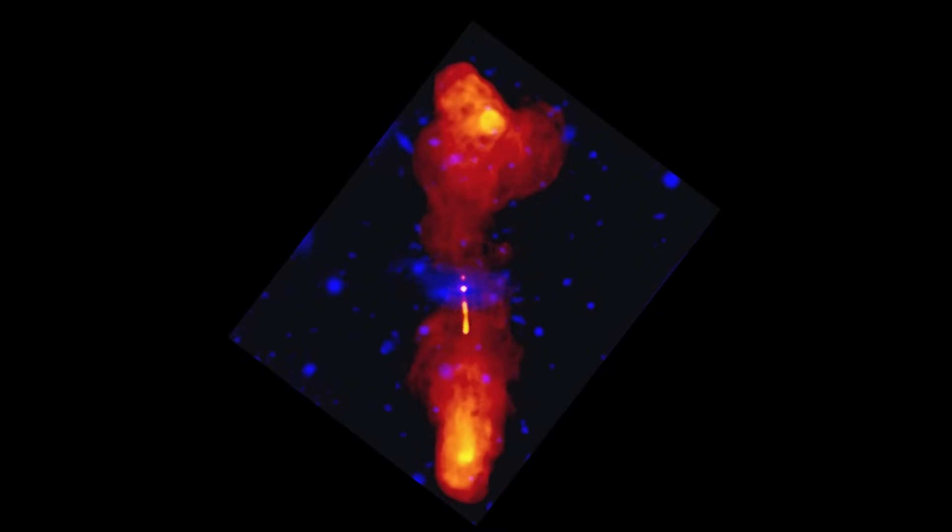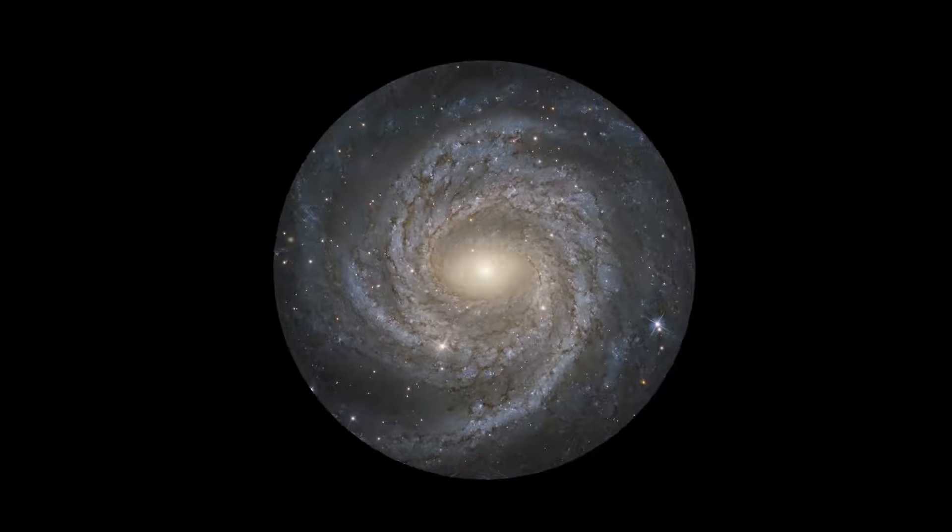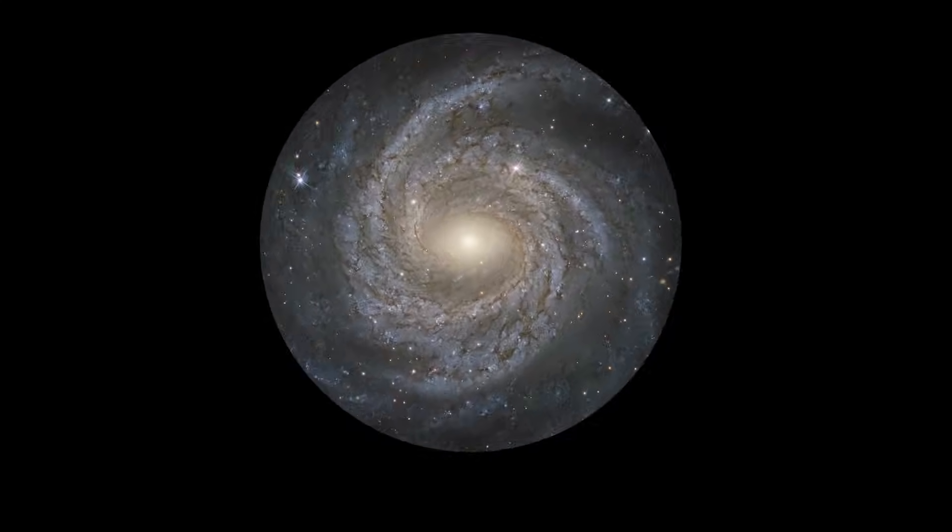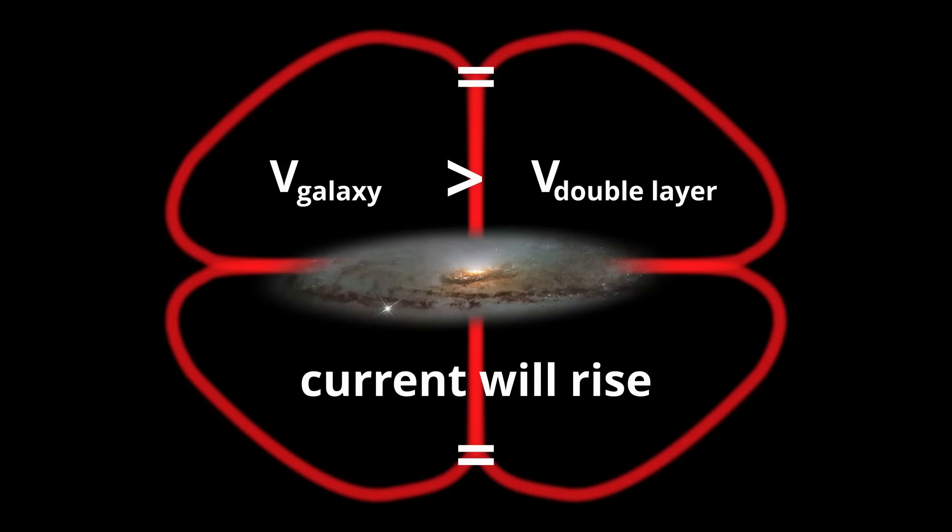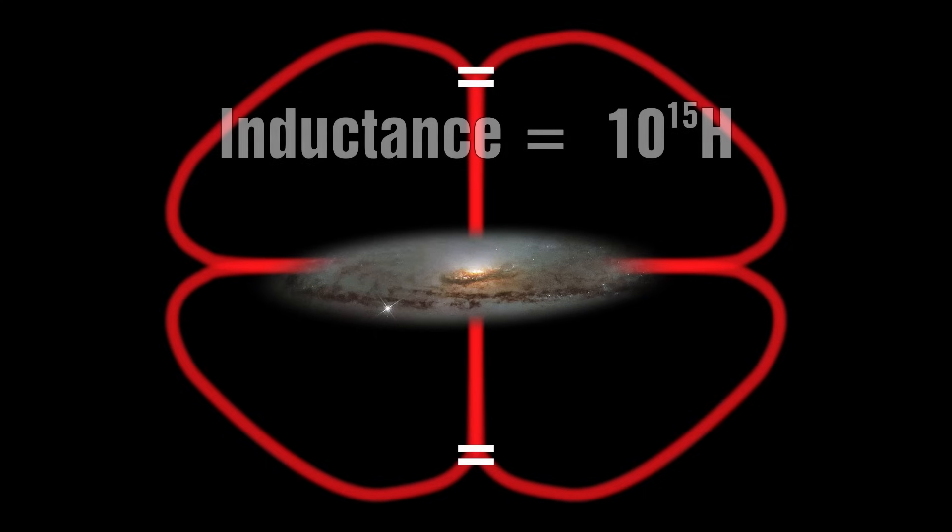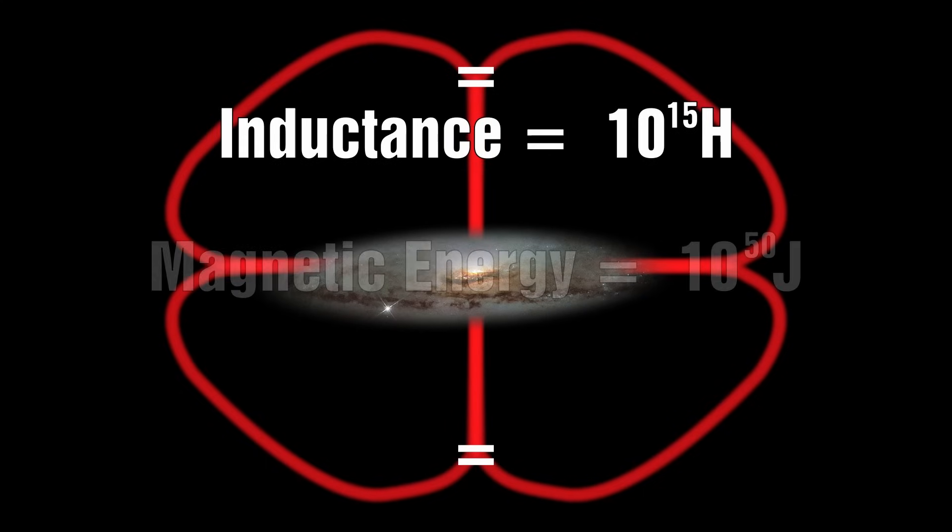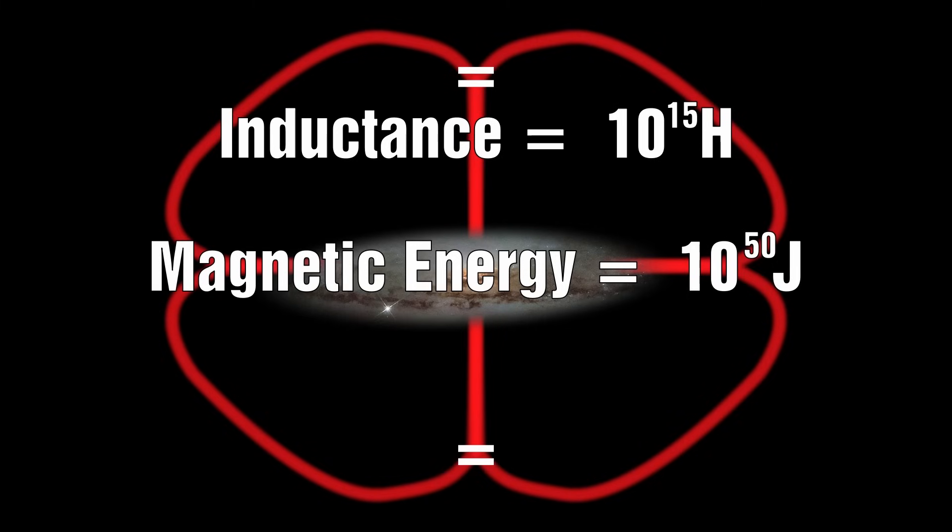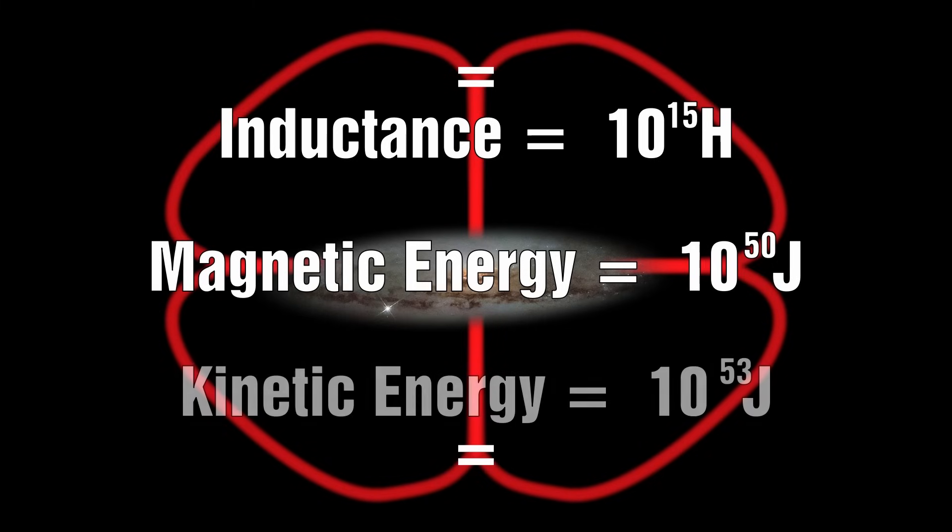Alfvén goes on to discuss that the energy for this circuit could be supplied simply by the rotational energy of the galaxy. He shows that as long as the voltage of the galaxy is greater than the voltage of the double layer, the current will continue to grow. And once they are equal, the current is constant. He calculates that the inductance of our galaxy could be as large as 10 to the 15 Henrys, and the magnetic energy as much as 10 to the 50 joules. He calculates that the kinetic energy of the galaxy rotation is about 10 to the 53 joules, showing that the magnetic energy is only a small fraction of the total energy.